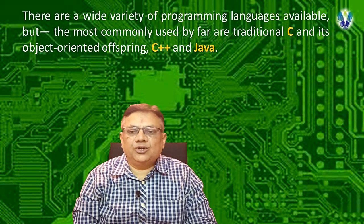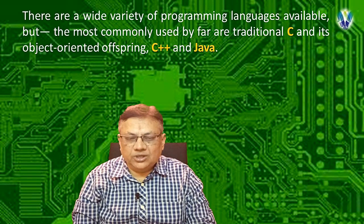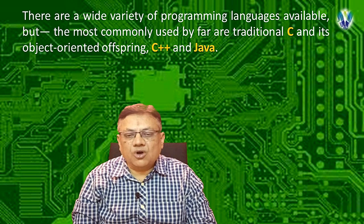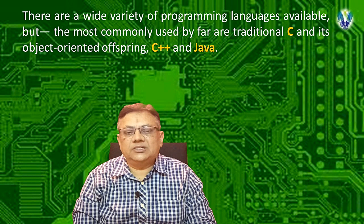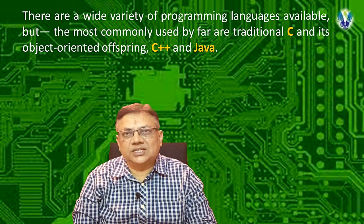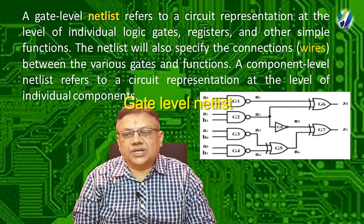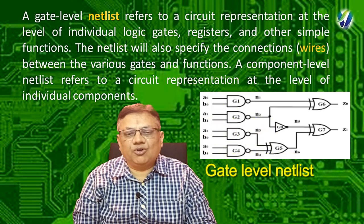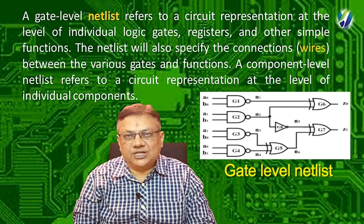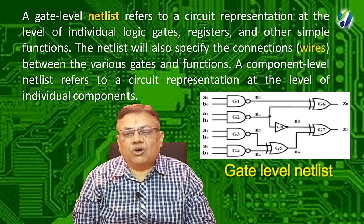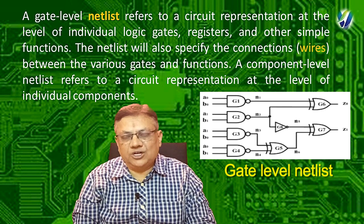There are a wide variety of programming languages available, but the most commonly used by far are traditional C and its object-oriented offspring C++ and Java. A gate-level netlist refers to a circuit representation at the level of individual logic gates, registers, and other simple functions. The netlist will also specify the connections between the various gates and functions.